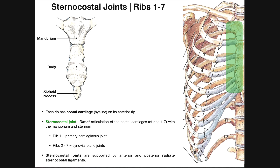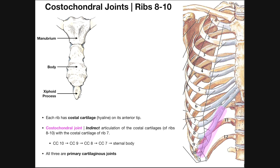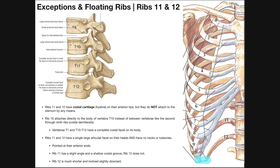We're going to continue our discussion of the ribs and talk about how the ribs articulate with the sternum. We're going to see two major kinds of joints: sternocostal joints and costochondral joints. The reason we won't have a third is because we actually have floating ribs that only articulate with the vertebra posteriorly but do not articulate with the sternum at all.